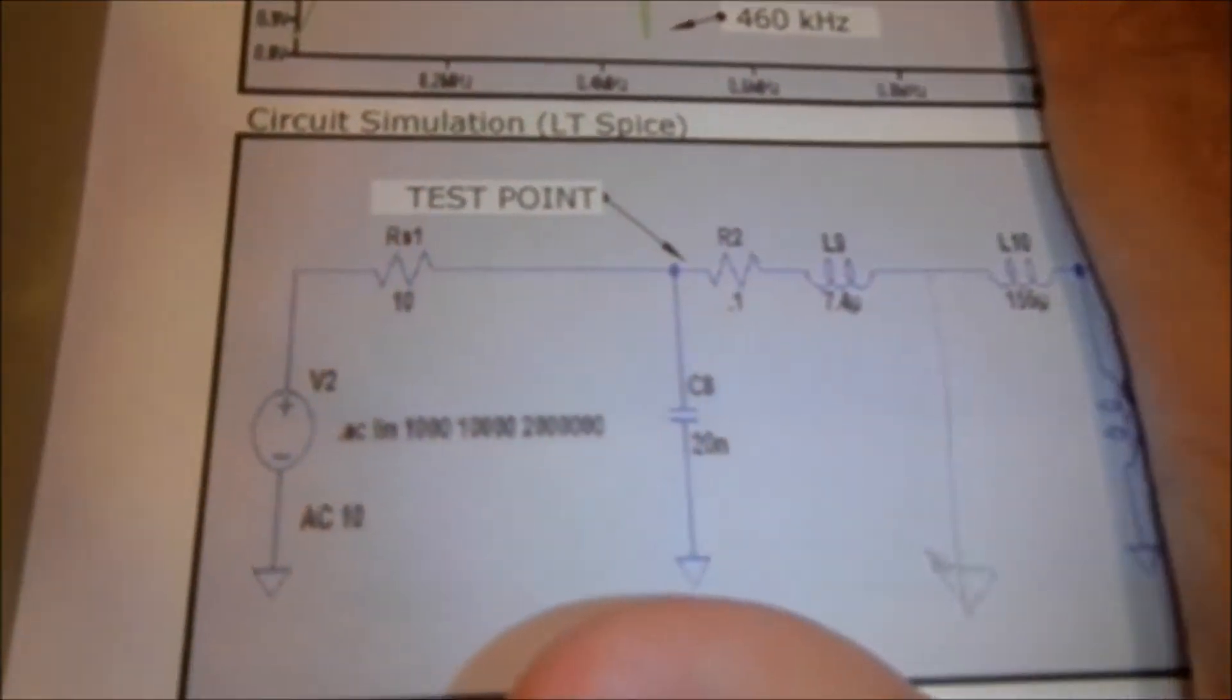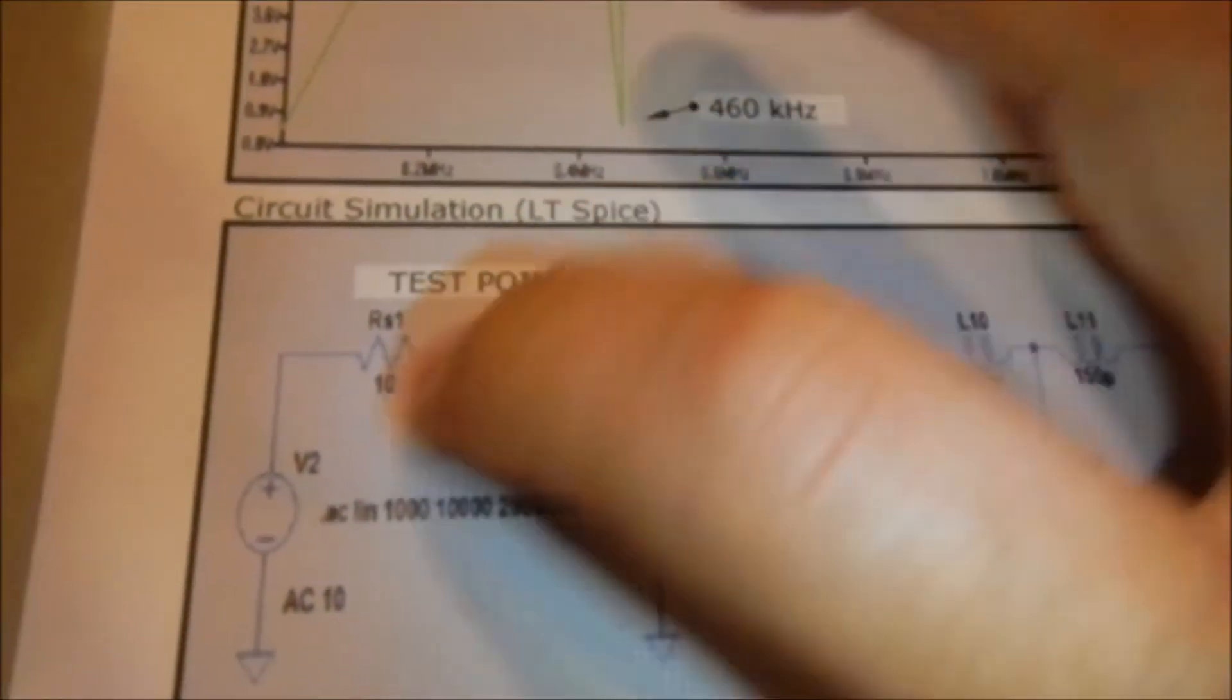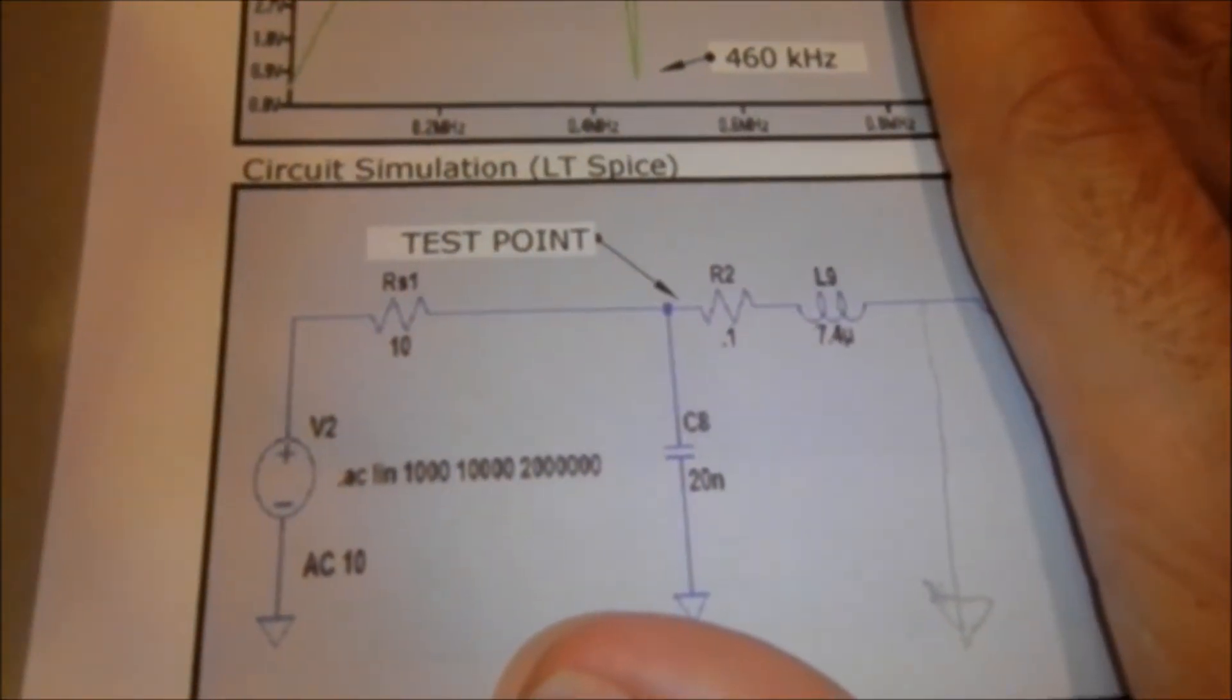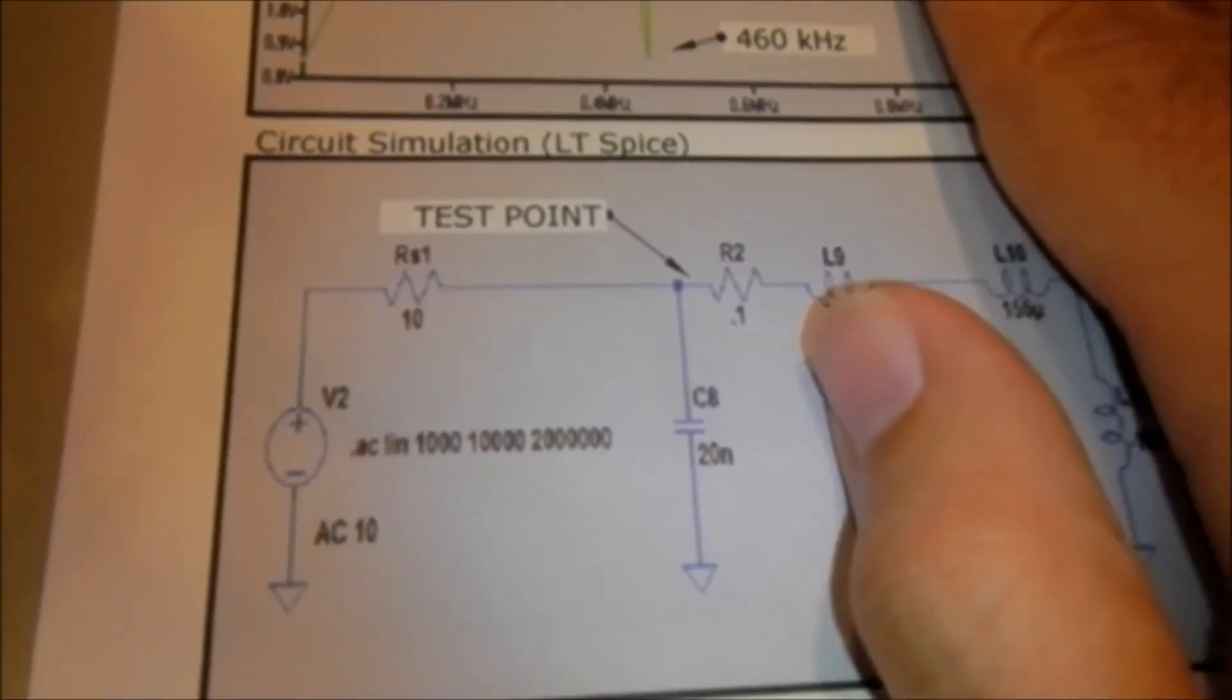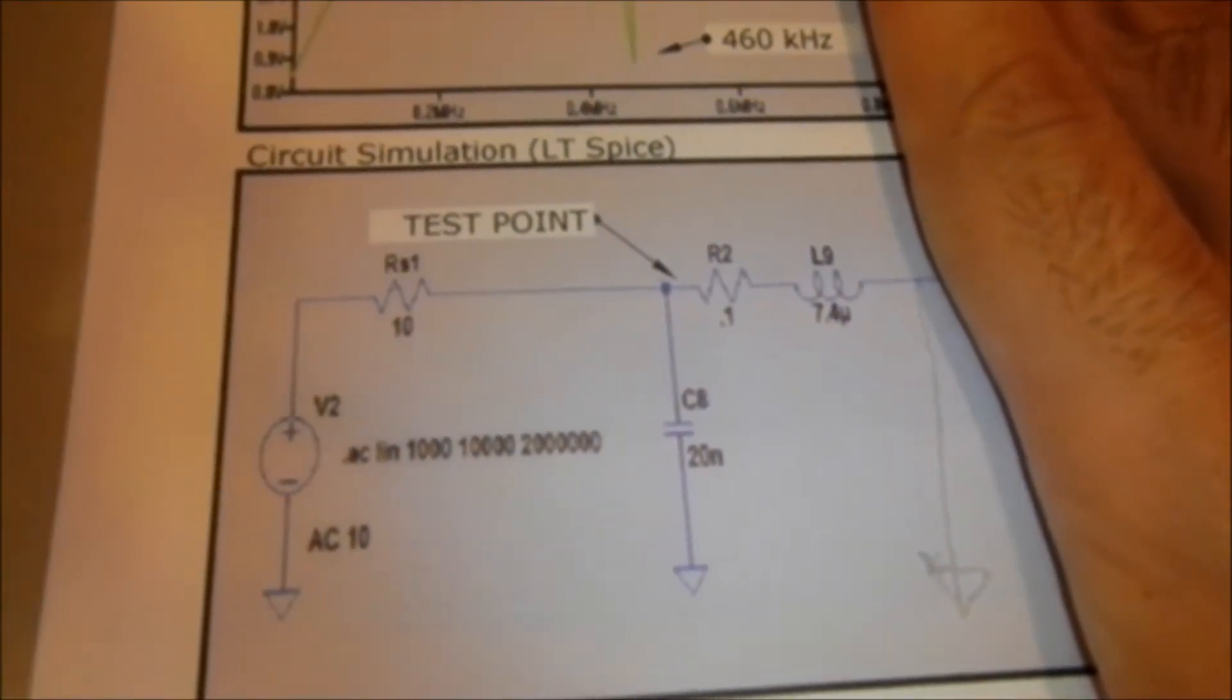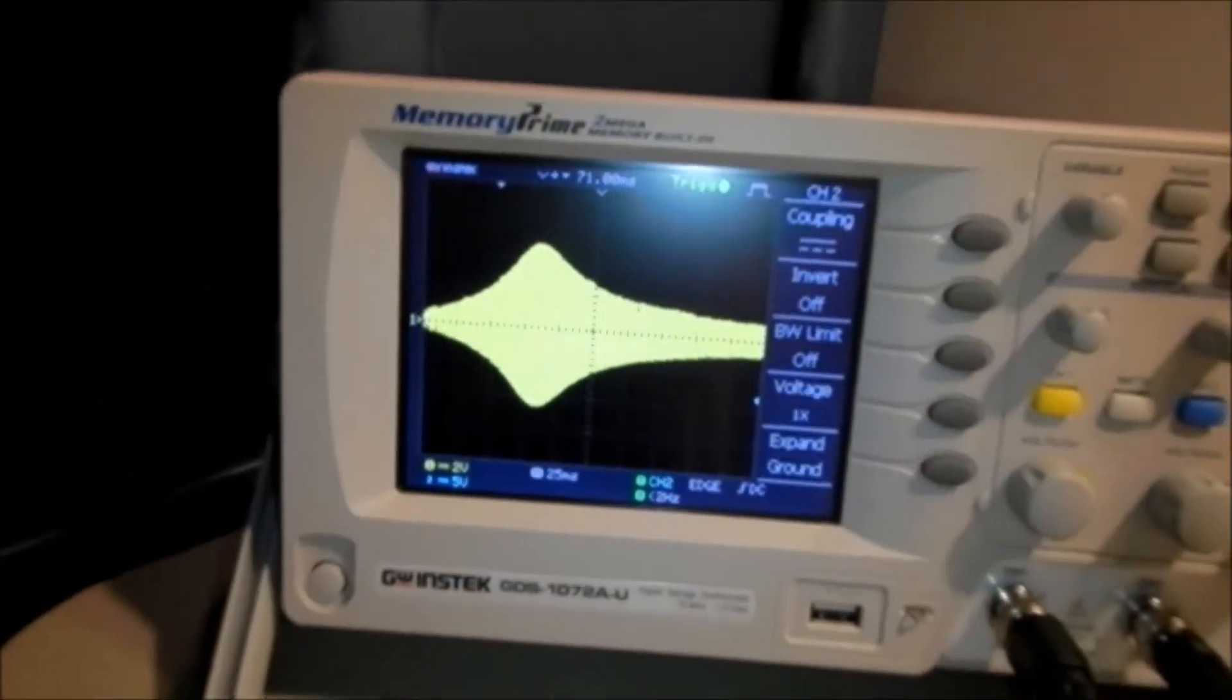So what we're looking at is the oscilloscope and the function generator. The oscilloscope's attached right here, and the supply is representative of our function generator, and we're just doing a sweep across this parallel LC circuit. So that's sort of what the Tesla coil circuit looks like right now, and this is the frequency response.